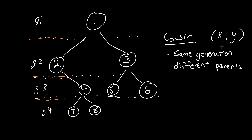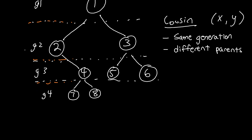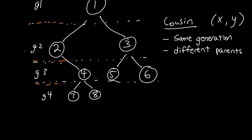Now we want to check if two nodes are cousins. The way we do that is we'll use a modified version of breadth-first search. The good thing about breadth-first search is that it allows us to search through the binary tree generation by generation.